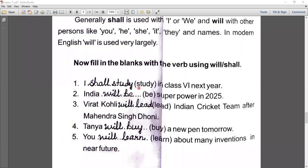We will not do any changes in the verb. We will use the verb in first form. Now second sentence: India blank be a superpower in 2025. We are talking about 2025, we are talking about the future. So here we use will and verb as be. That is will be.